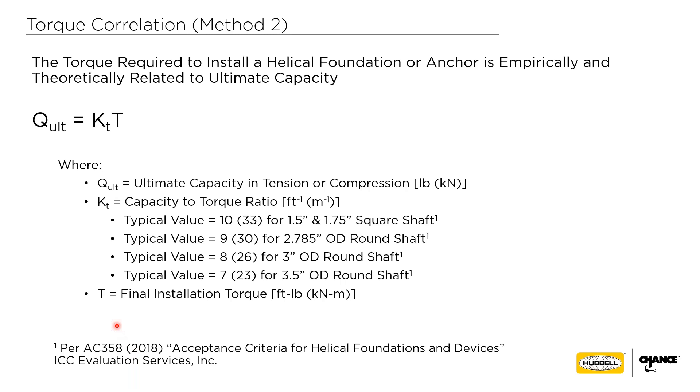Torque correlation — Method 2 — is very straightforward. If you measure torque, you can predict the capacity based on the torque factor, or Kt value. It basically says that for a particular shaft size or displacement of materials, that torque factor can be used. These are all pre-qualified torque factors based upon the acceptance criteria used to evaluate helical anchors and piles, which is what leads to those building code evaluation reports.